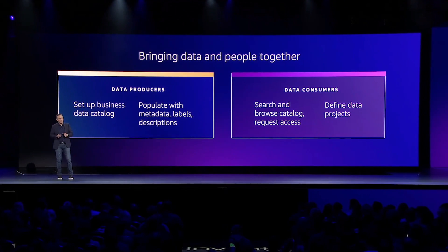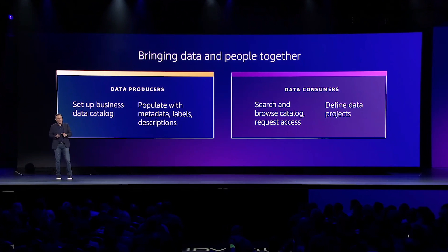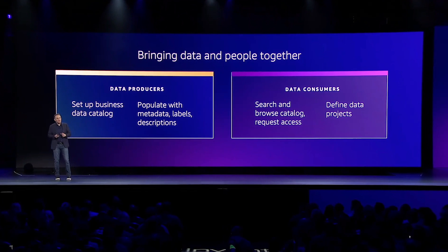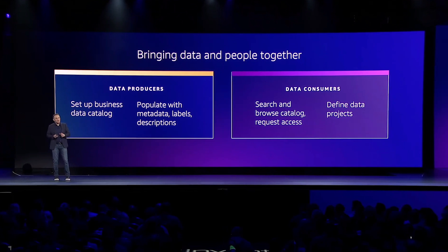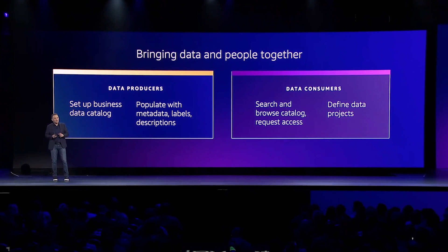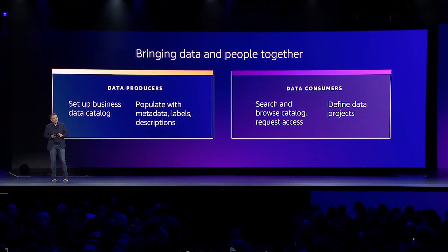Amazon Data Zone has a web portal where data producers can set up business data catalogs. These data catalogs have your own business glossary and descriptions based on your organizational hierarchy. You can then connect your data zone to your data sources, which uses ML to populate it with appropriate metadata, and then you publish the catalog.